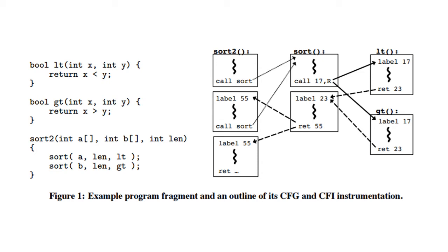CFI verification will add labels to all possible destinations and checks to all possible sources from computed jumps. Here we can see that after each call to the sort function in the sortTo function, labels are added, because these locations are valid addresses to return to after the sort function has finished.